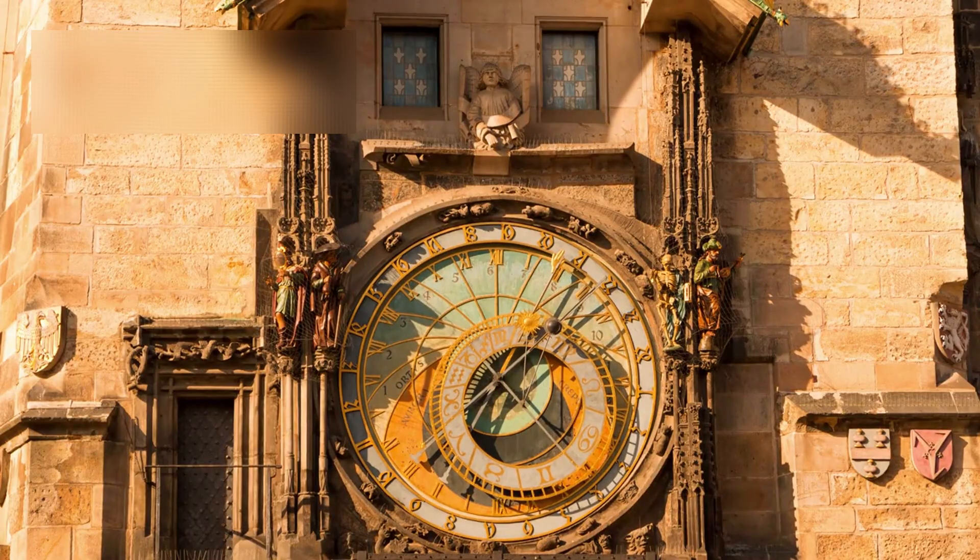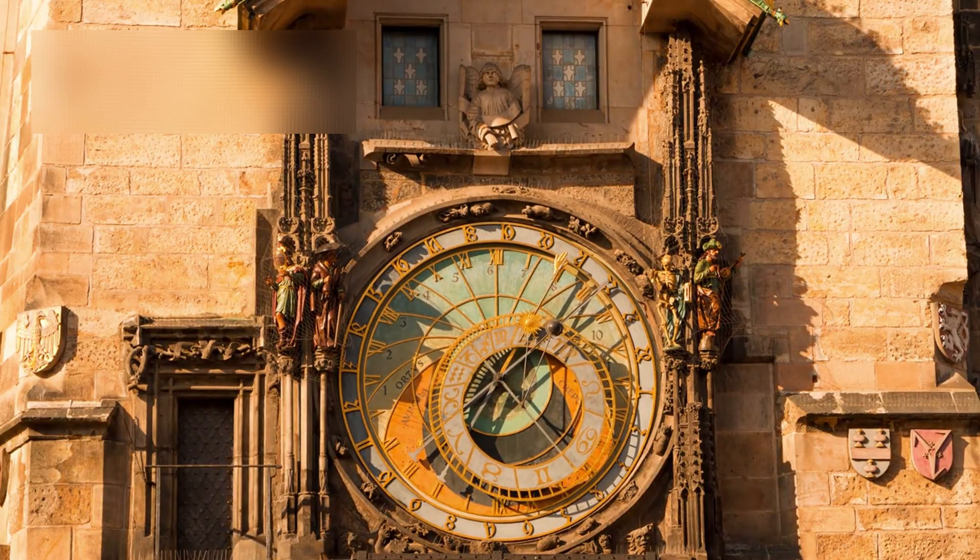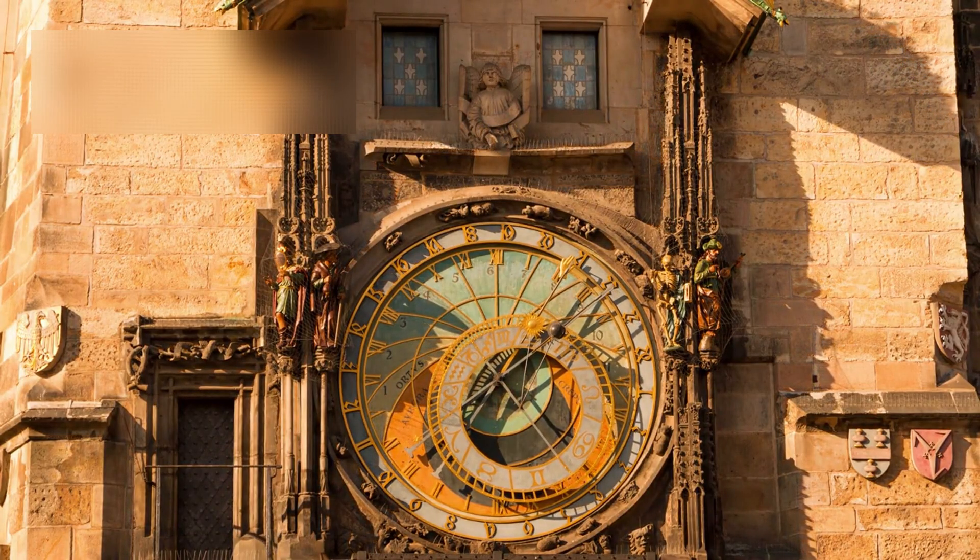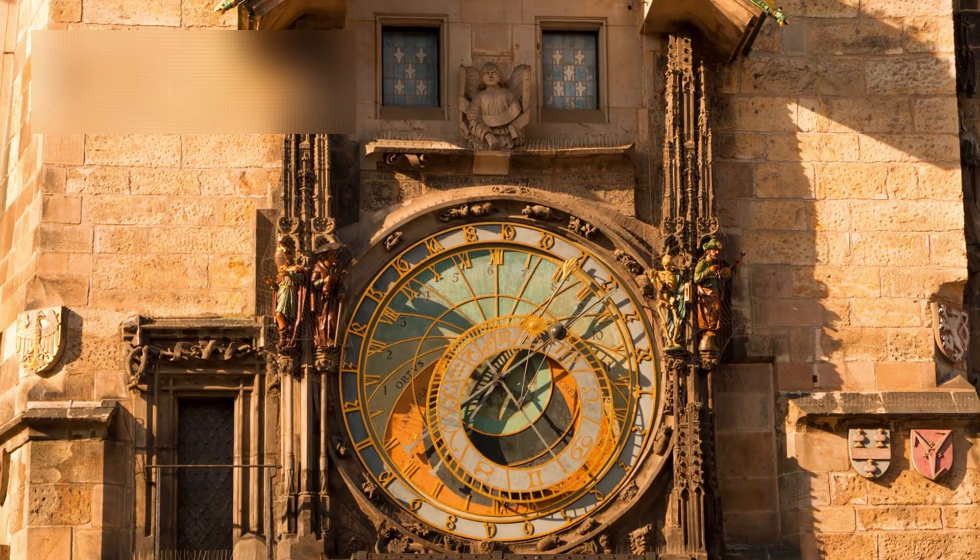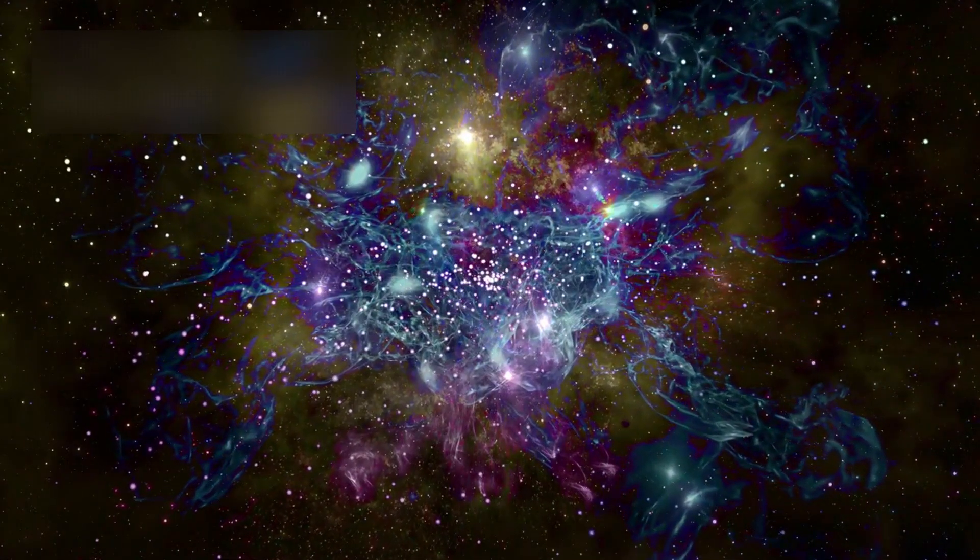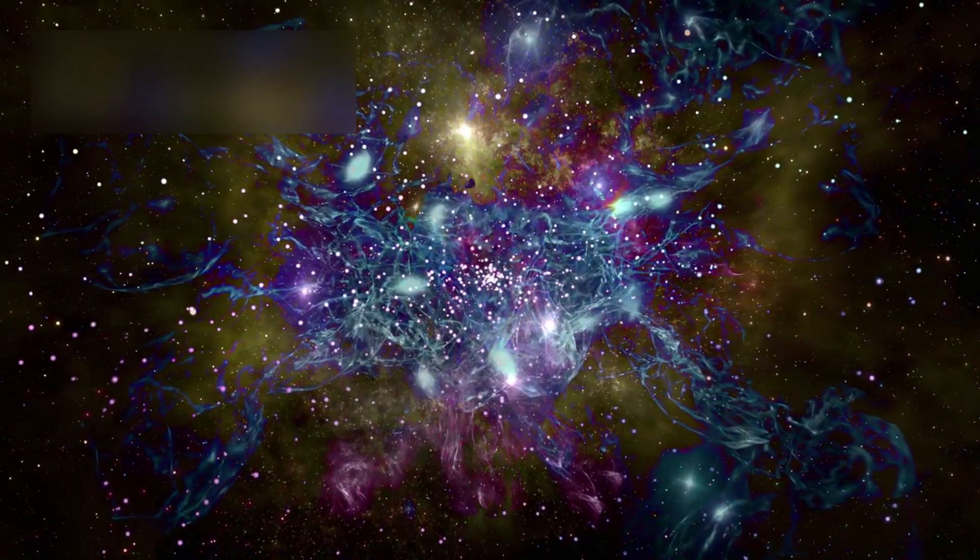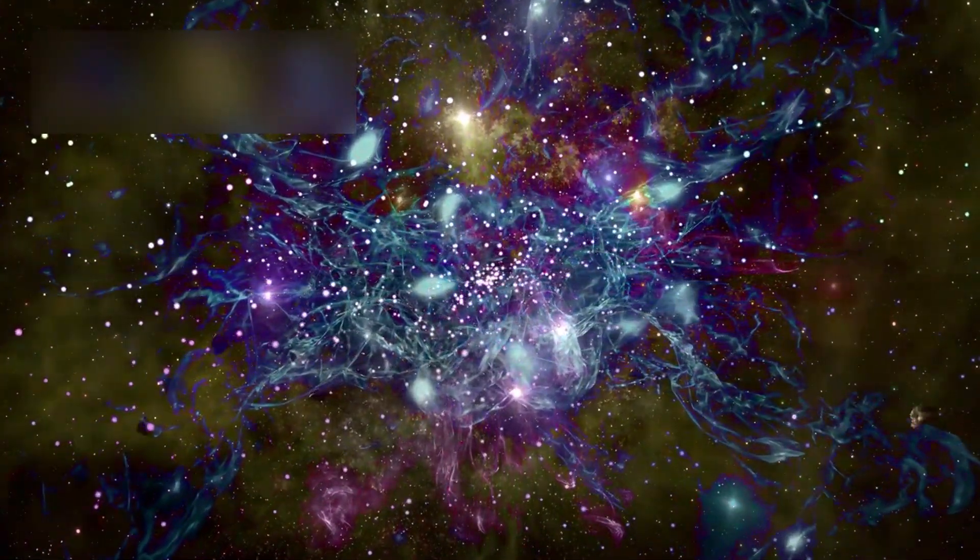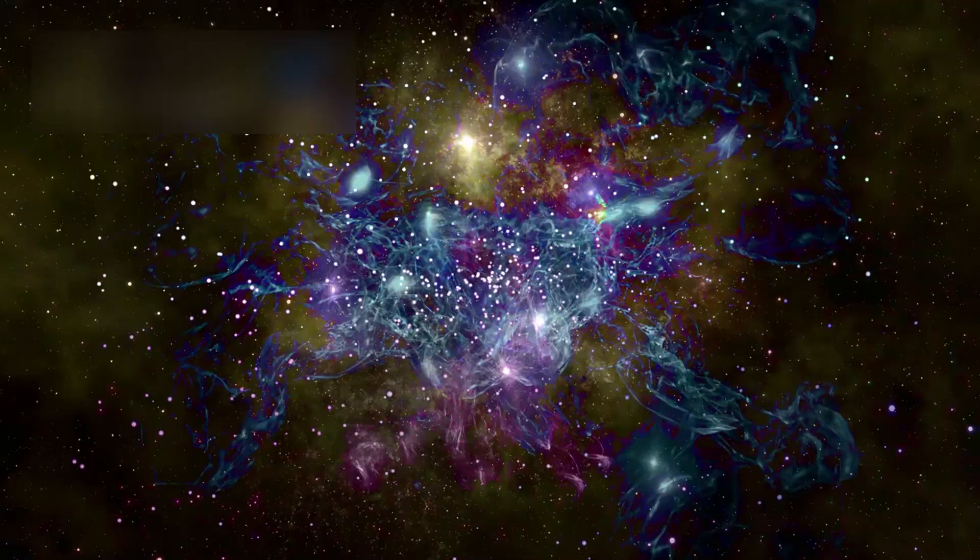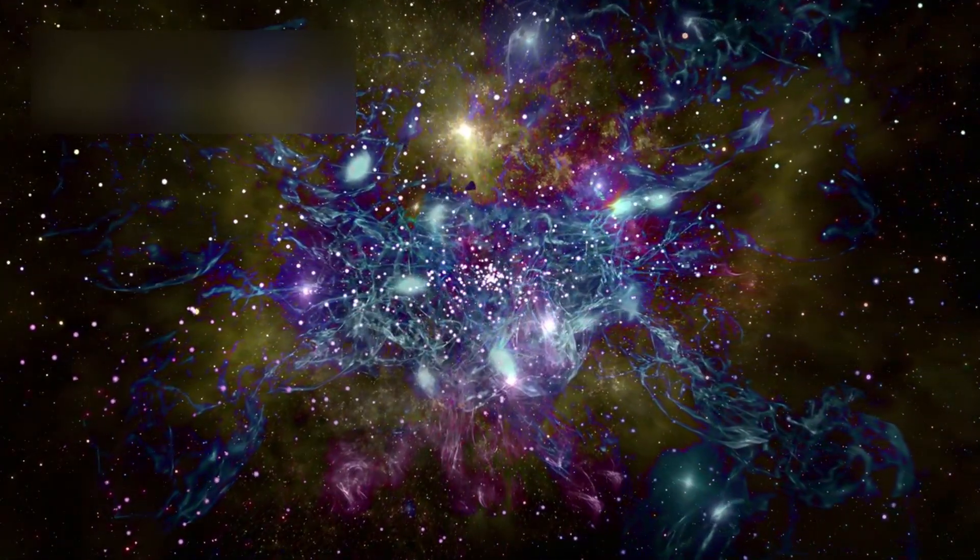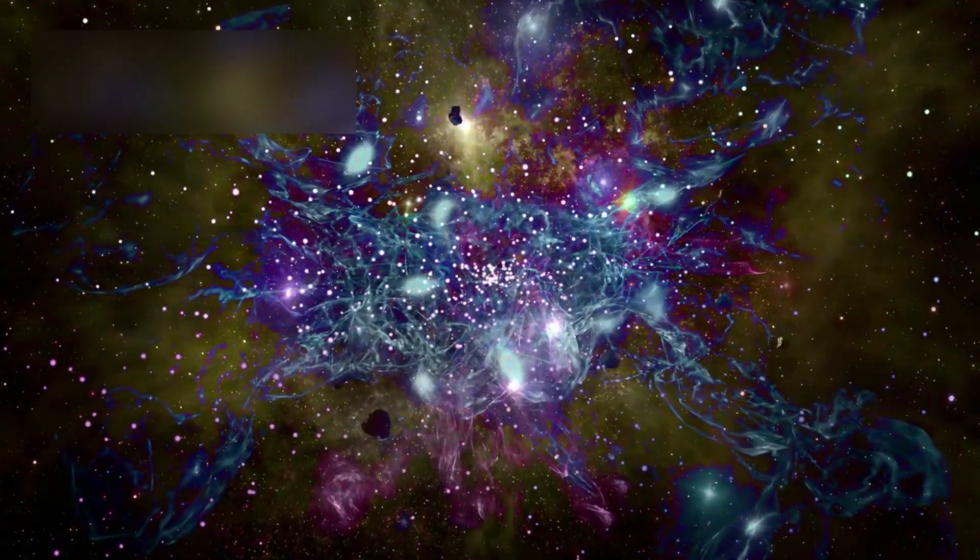But while Webb searches for life around nearby stars, it also peers backward, far beyond time as we know it, into the universe's own beginning. And what it finds there is no less miraculous. In a distant galaxy known as SPT0418-47, billions of light-years away, Webb detected something remarkable, the presence of complex organic molecules, the same carbon-rich compounds that make up soot, smoke, and even the basis of life on Earth.